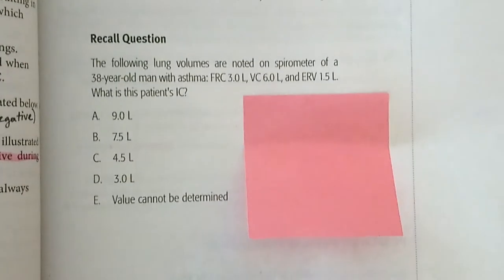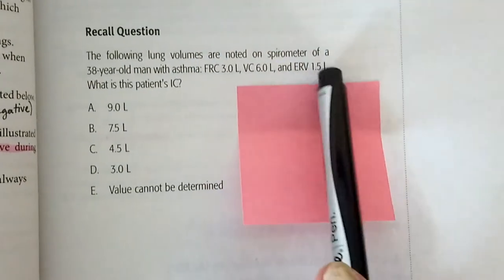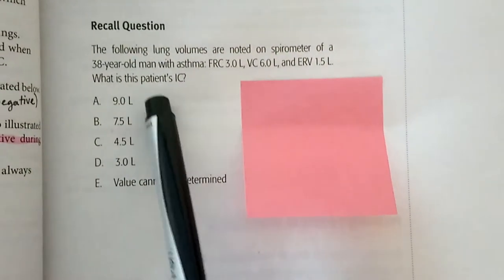So basically, they're just giving you some information about some of the compartments, and they're asking you for the inspiratory capacity. So let's go back to the drawing I made.